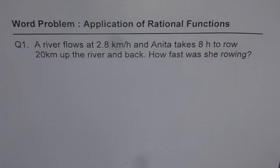Question number 1: A river flows at 2.8 km per hour and Anita takes 8 hours to row 20 km up the river and back. How fast was she rowing?